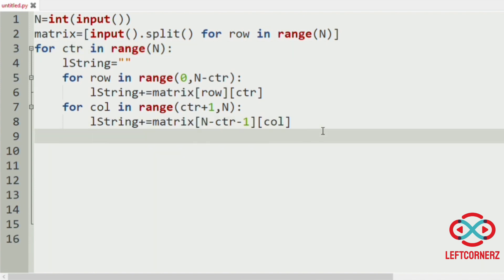Now we will check whether this L string is palindrome or not. If L string equal to equal to the reverse of L string, that is L string using the slice operator, then we have to print the L string.